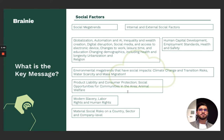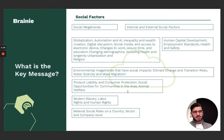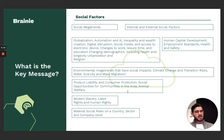So what is the message? This chapter obviously deals with social issues that we are faced with. Anything pertaining to human beings is dealt with in this factor. There are numerous injustices, inequalities and issues. Many relate to so-called social megatrends. These are unstoppable, almost irreversible trends that have been shaping up over the past decades. The megatrends are: globalization; automation and AI; inequality and wealth creation; digital disruption, social media and access to electronic devices; changes to work, leisure time and education; changing demographics including health and longevity; urbanization; and lastly, religion.